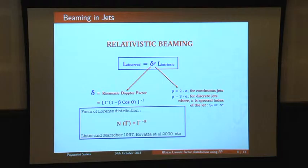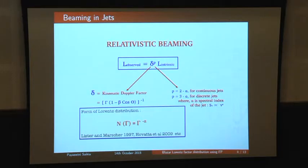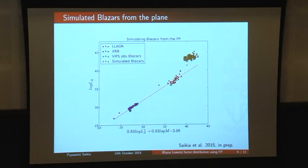We take the intrinsic luminosity from the fundamental plane, assume a continuous jet case with flat spectra (alpha = 0), use a theta distribution uniform from 0 to 30 degrees, and take a previously used power-law distribution with index minus 2. We simulate a theoretical sample boosted from the intrinsic fundamental plane luminosity and compare it with the observed VIPS sample to see if their radio luminosity distributions overlap. What we see is that in green are the observed VIPS data, and in orange the boosted simulated sample — and they do overlap.